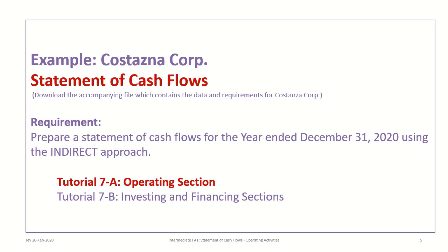This tutorial is based on the CostanzaCorp example, so please download the correct file to follow along. The data includes a comparative balance sheet and an income statement, which are absolutely necessary to creating a statement of cash flows. The requirement is to prepare a statement of cash flows using the indirect approach — tutorial 7a covers the operating section, and tutorial 7b will cover investing and financing sections.